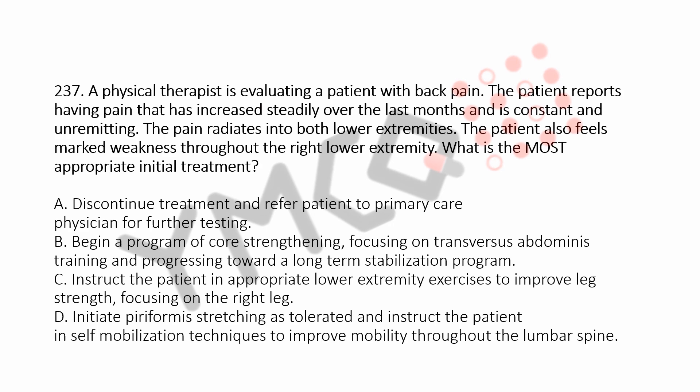Option B: Begin a program of core strengthening, focusing on transversus abdominis training and progressing toward a long-term stabilization program. Option C: Instruct the patient in appropriate lower extremity exercises to improve leg strength, focusing on the right leg. Option D: Initiate piriformis stretching as tolerated and instruct the patient in self-mobilization techniques to improve mobility throughout the lumbar spine.